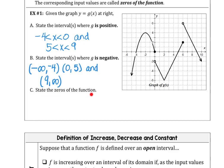Finally, we want to state the zeros of the function. And the zeros of the function are where the graph of the function crosses the x-axis. So we have a zero at (-4, 0), a zero at the origin (0, 0), a zero at (5, 0), and a zero at (9, 0). And we're going to record those as ordered pairs.